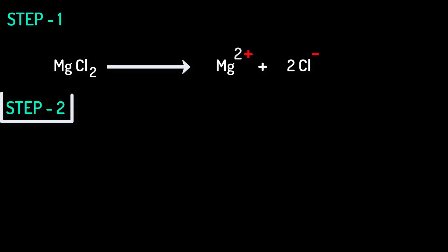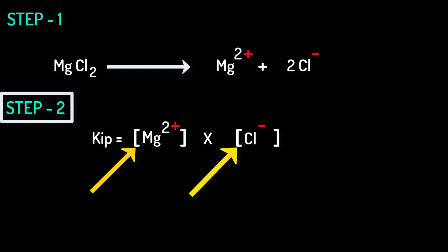Step 2. In this step we will write KIP equals to this cation within square brackets times this anion within square brackets. Do remember in chemistry we use square brackets to show concentration.